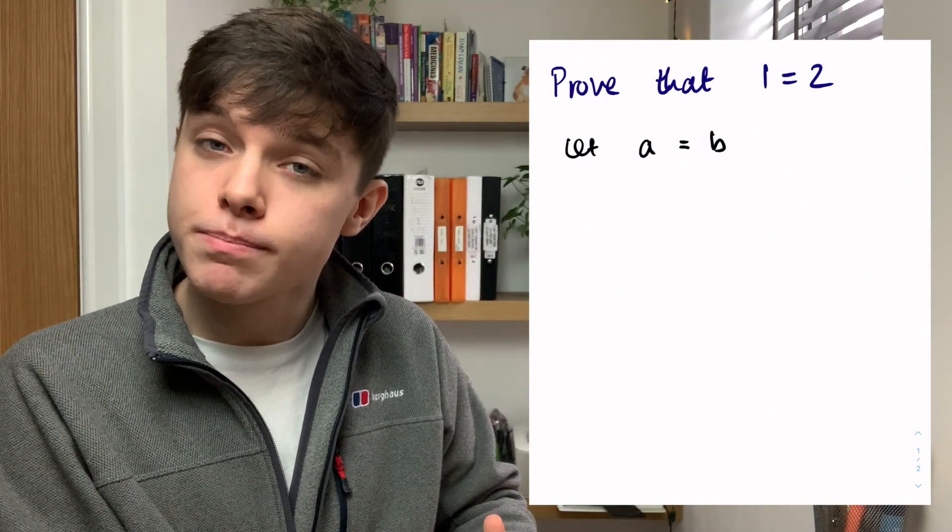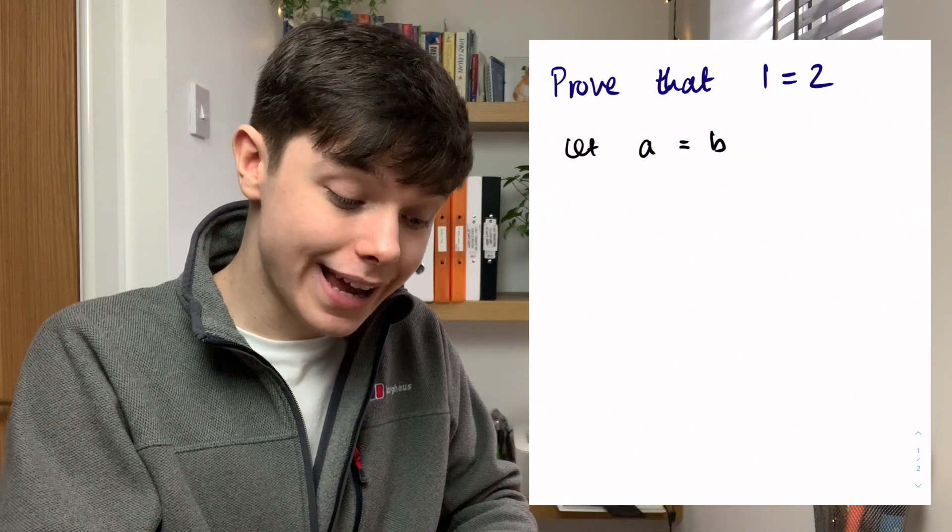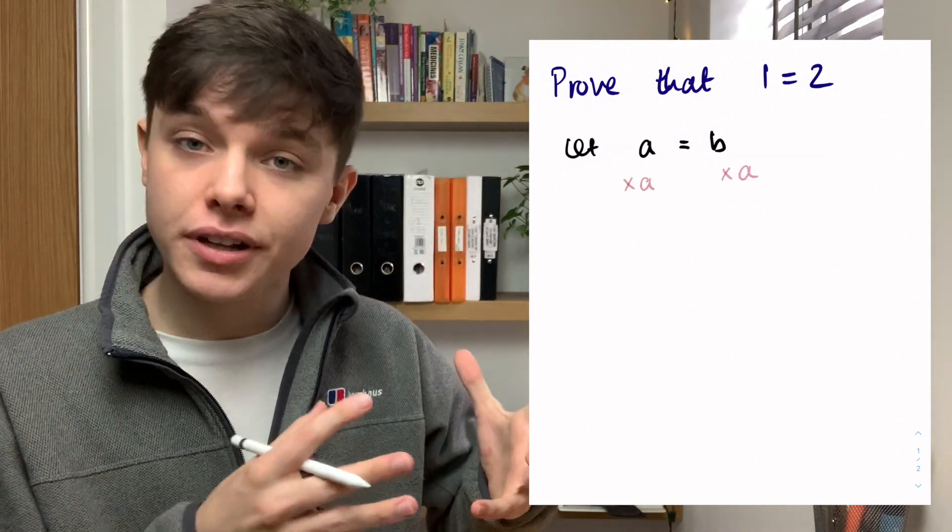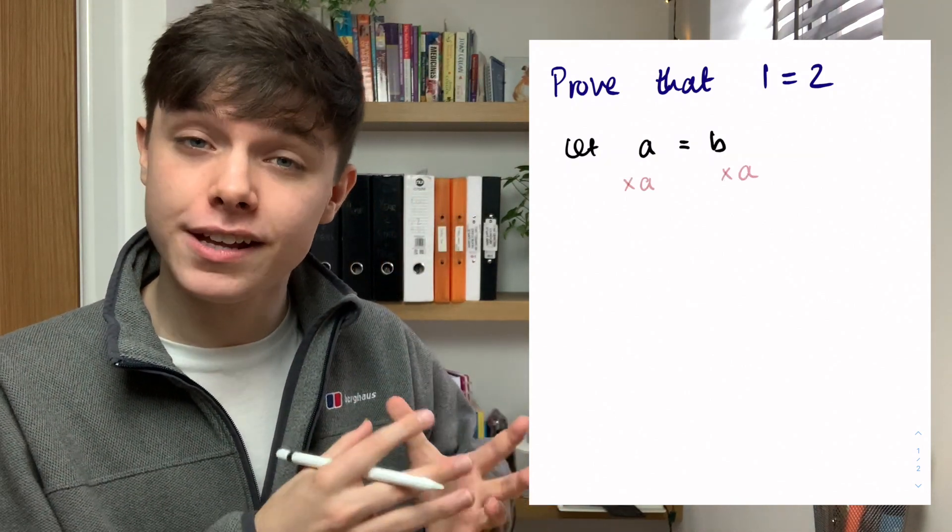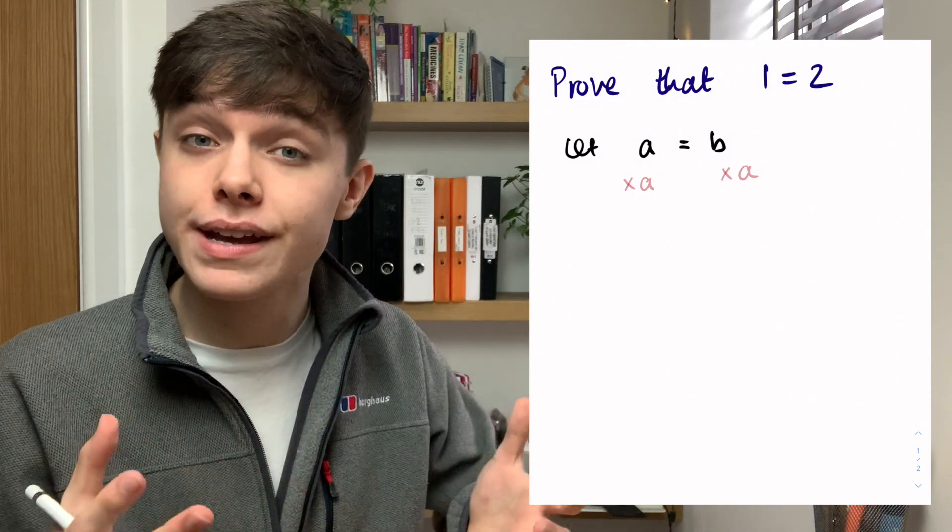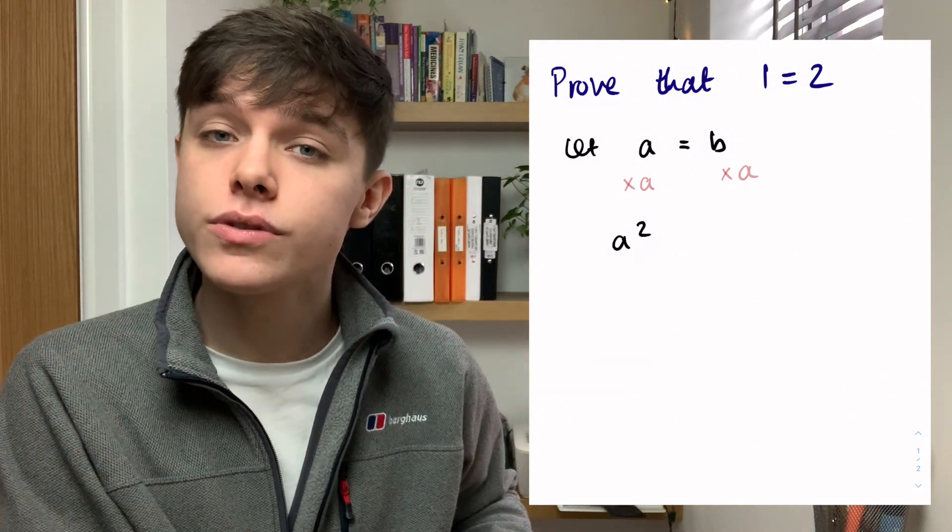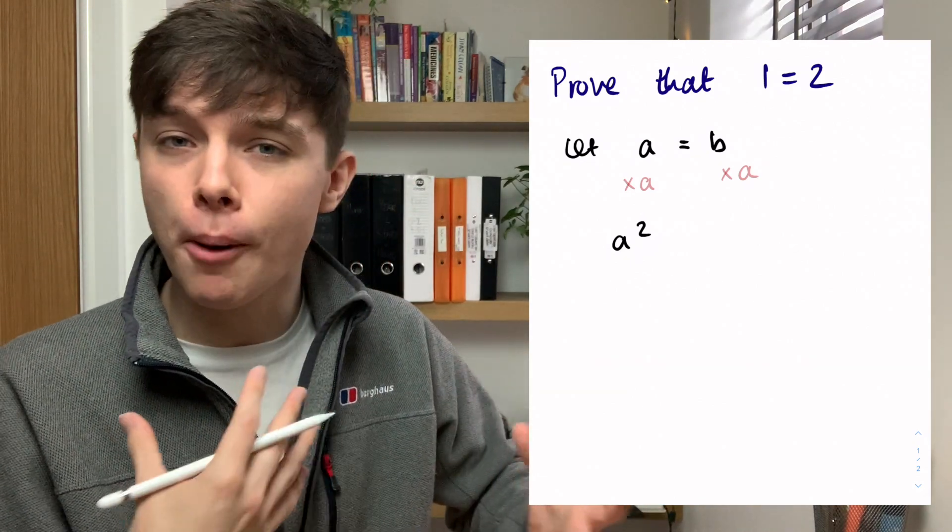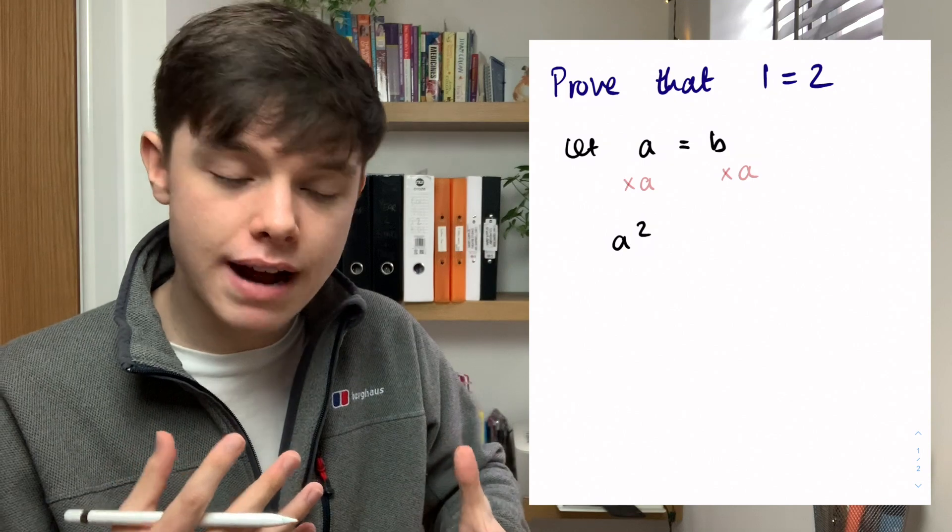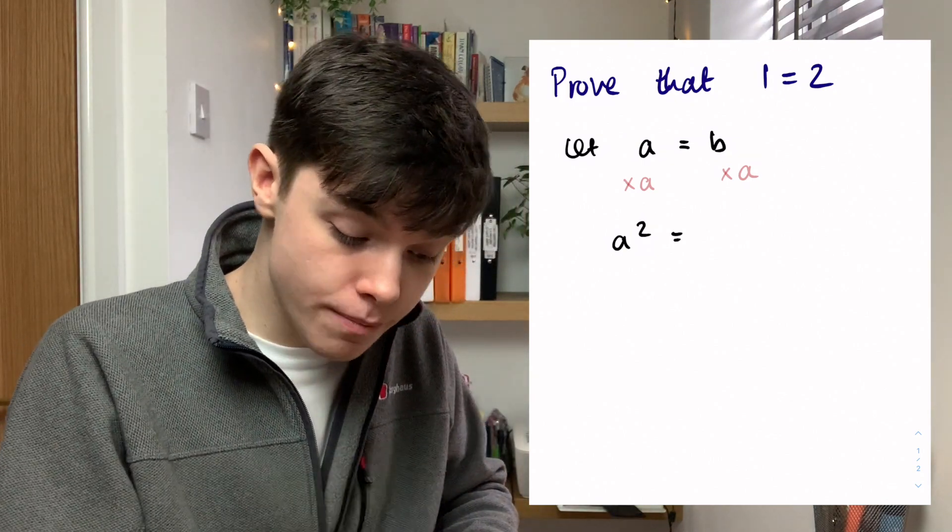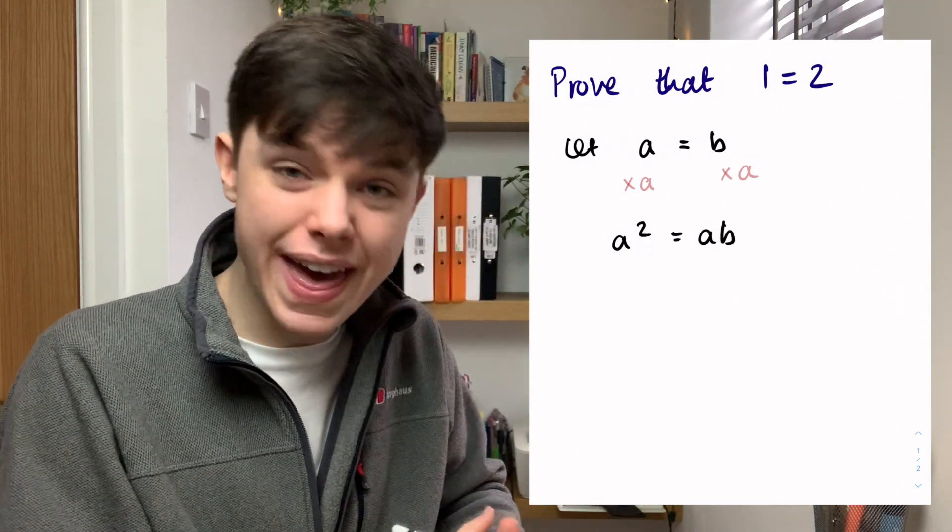Now what I'm going to do is I'm going to multiply both sides by a. On the left hand side we're just going to have a times a which we can just write as a squared. On the right hand side we're going to have a times b or b times a. I'm going to write it alphabetically so we're going to end up with ab.